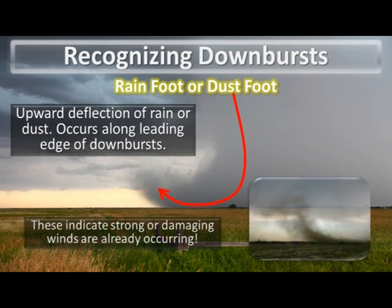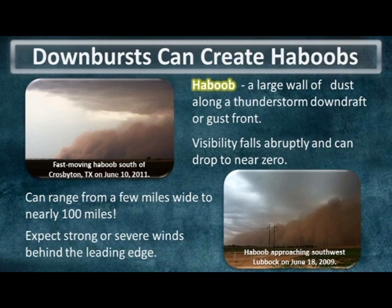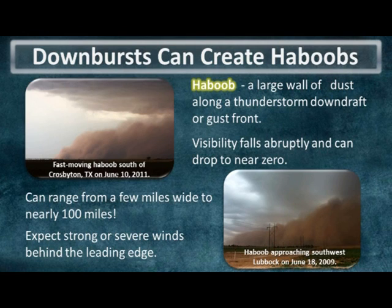So how do you recognize a downburst? The easiest method involves looking for what's known as a rain foot, or a dust foot in cases where little if any rain is falling. In this photo, the dark gray mass is torrential rain falling rapidly to the ground, and as it hits the ground it spreads out and upward, indicating very strong winds. In those cases where very little rain is falling, you'll see just some blowing dust — a dust foot. If downbursts grow large enough over dusty areas, they can become large walls of dust called haboobs, and here in the National Weather Service Lubbock forecast area, visibility can fall to near zero with wind speeds easily over 60 miles per hour.